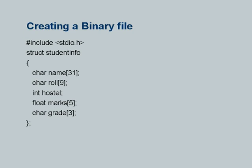At the end I will give the student a 2-character grade — AA, AB, BB, BC, CD, DD, FF, whatever — and therefore I have char grade[3]. Notice that this structure totally occupies: 31 plus 9 is 40, plus 4 for the integer is 44, plus 5 floats times 4 bytes each is 20, so 44 plus 20 is 64, plus 3 is 67 bytes. So 67 bytes is the record length here.